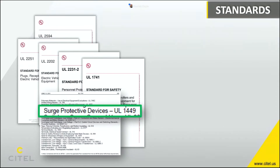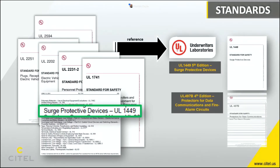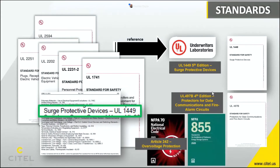UL 1449 includes production line testing plus supplements related to PV and DC power protectors. Another standard is UL 497B, with 25 sections covering signal line protectors for communication and fire alarm circuits; UL 497E for coaxial also deserves mention. These standards can be found in mandatory codes as well — notably NFPA 70, the National Electric Code, and NFPA 855 for stationary energy storage systems.